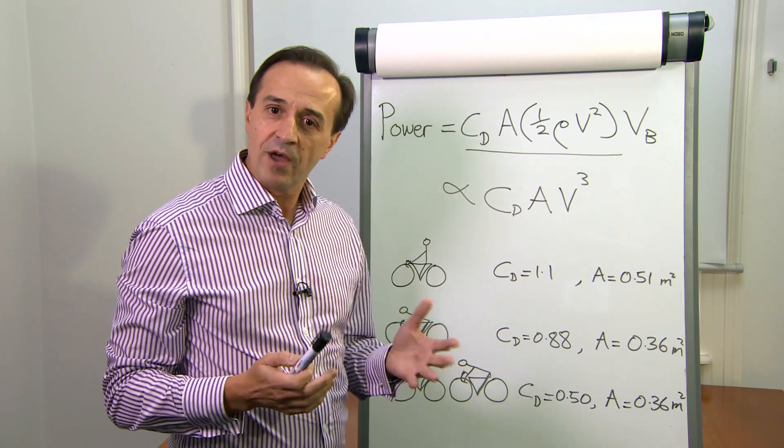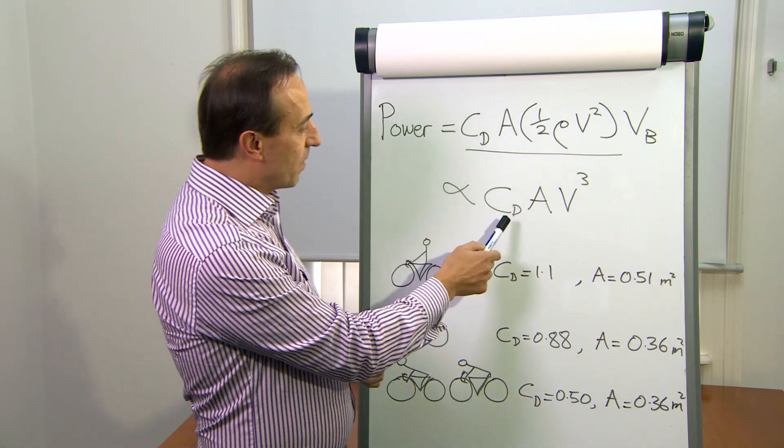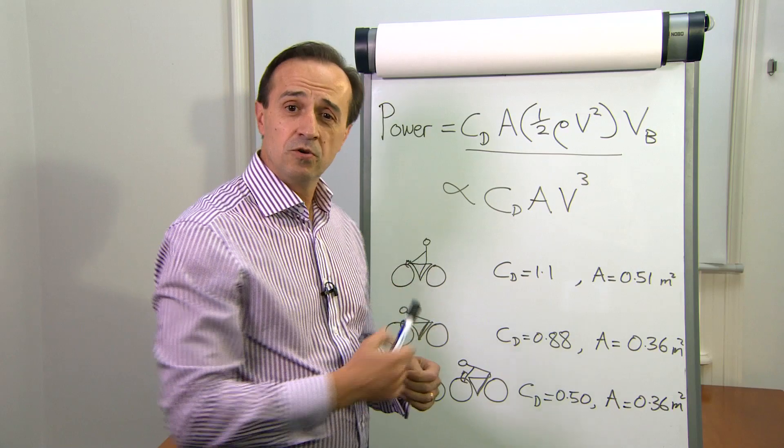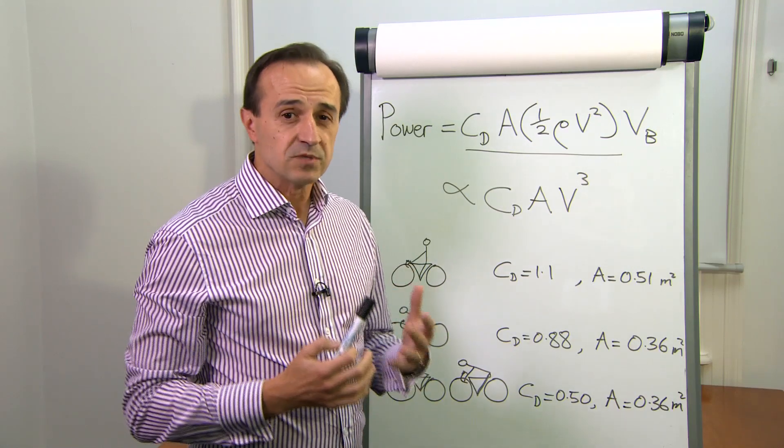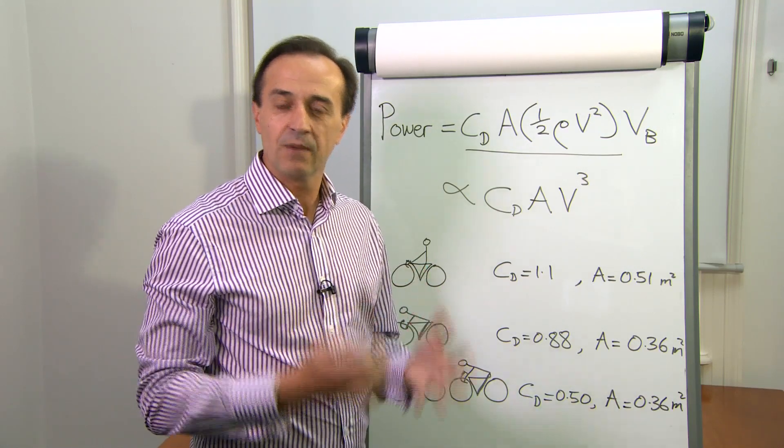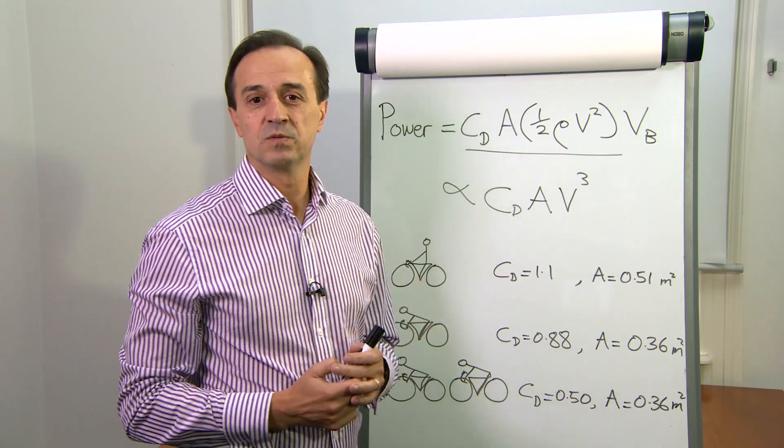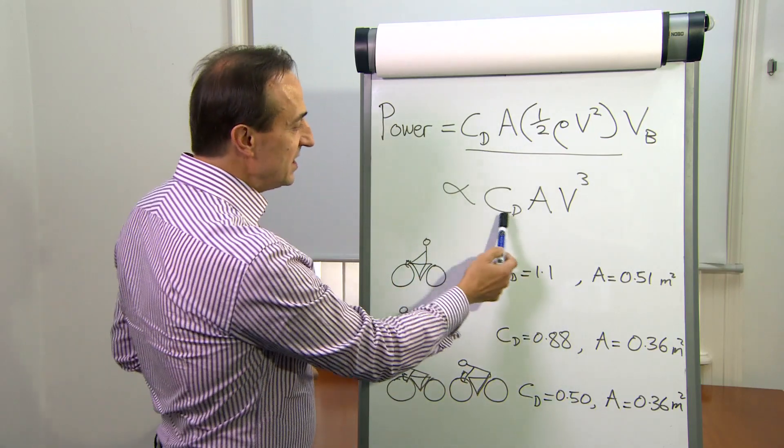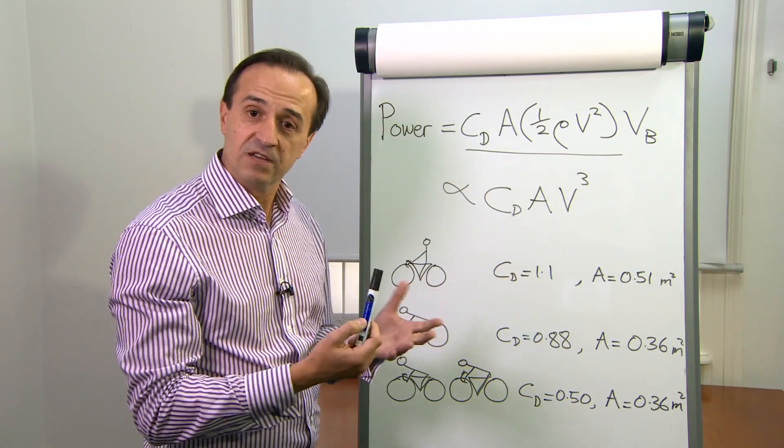Now in a scenario where there's no headwind, the power then is proportional to the velocity cubed. So going faster comes at a huge penalty. For example, if you double your speed, you need eight times more power. And of course, CD and A are the things that remain for a given speed.